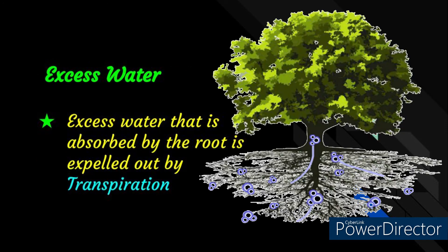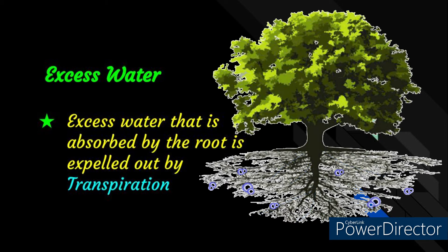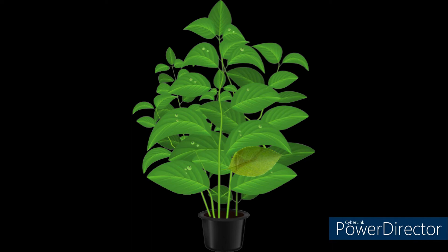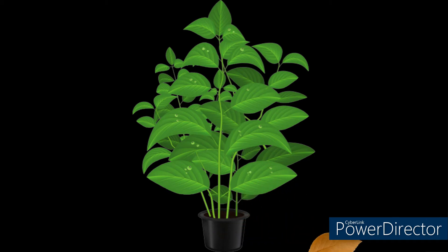Excess water is eliminated by the process of transpiration through stomata. Waste products may be stored in leaves, buds, or any other parts of the plant, which may fall off or get rid of the plant.